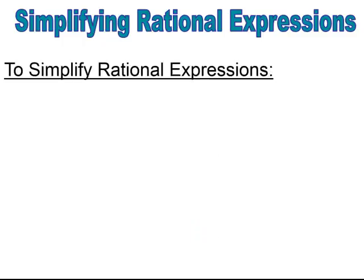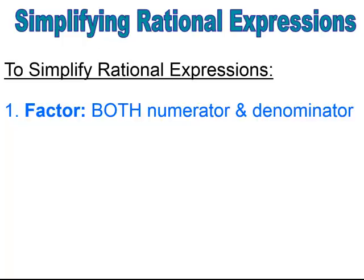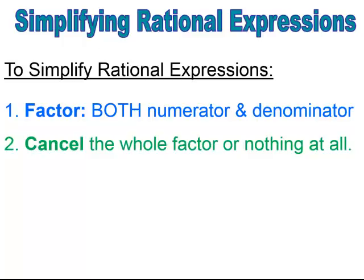Now we want to work with simplifying rational expressions. When we simplify rational expressions, the first thing you're going to need to do is factor — factor the numerator and factor the denominator. Then what you'll do is cancel out the common factors. Sometimes there might not be any common factors, but if there are, you need to reduce them out.